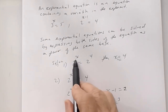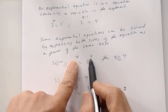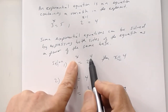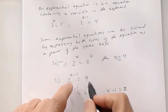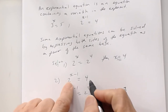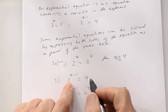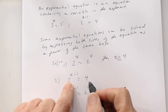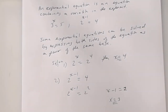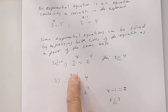The same reasoning applies: when the base is the same, the exponents have to be equal to each other. You can always check yourself — go back to the original. My solution is x equals 3. What's 3 minus 1? 2. What's 2 squared? 4. Correct. That's number 2.